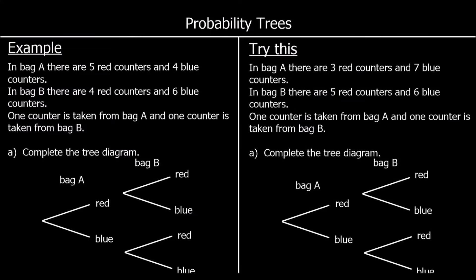In this video we're looking at drawing probability trees and answering questions based on probability trees. Let's look at the example. In bag A there are five red counters and four blue counters. In bag B there are four red counters and six blue counters. One counter is taken at random from bag A, one counter is taken at random from bag B. Complete the tree diagram.